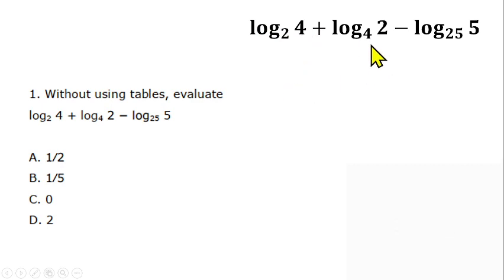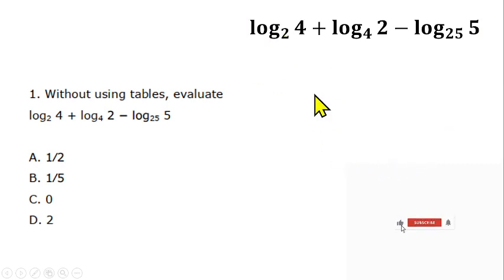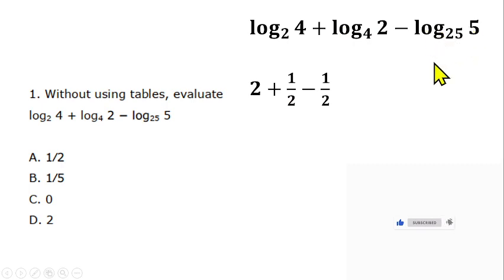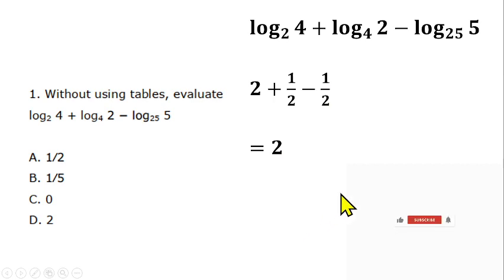How many times can you raise 4 to get 2? That is half, because 4 raised to power half gives us 2. Similarly, log 5 base 25: raising 25 to power half gives us 5, so that is also half. So the expression becomes 2 plus half minus half, which simplifies to 2. The answer is 2, which is option D.